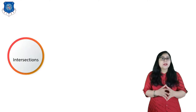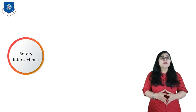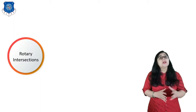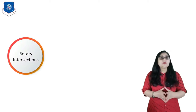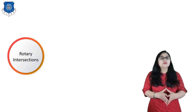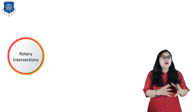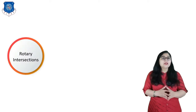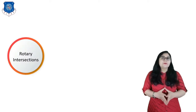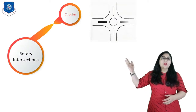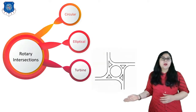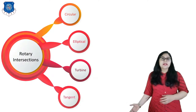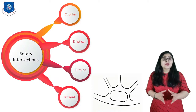Now let's move to the third type of intersection at grade: rotary intersection. A rotary intersection is a specialized form of intersection at grade in which traffic moves in one direction around a central island. For the keep-to-the-left rule, vehicles approaching the intersection are forced to move around the central island in an orderly manner and weave out to their desired directions. Types of rotary intersections based on shape are: circular, elliptical, turbine type, and tangent intersection.